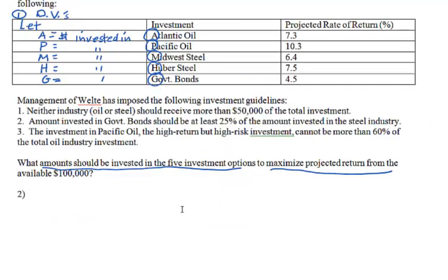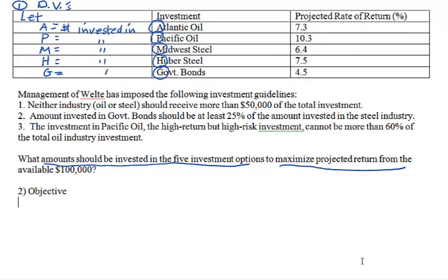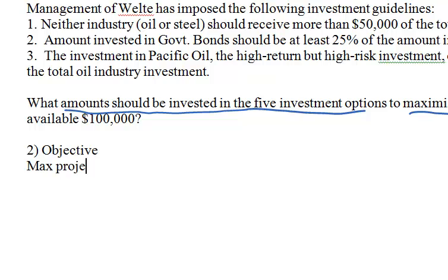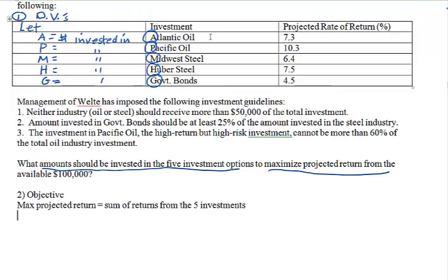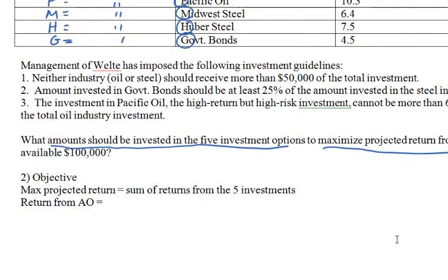Now we go on to the objective function. We want to maximize the projected return from the investments — that is, the total return, which is the sum of the returns from all five investments. So we need to find the return for each investment and then add them all up. Let's look at the first one: the return from Atlantic Oil. The projected rate of return is 7.3%.